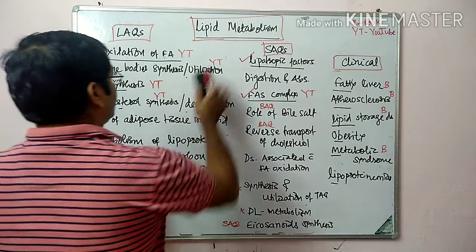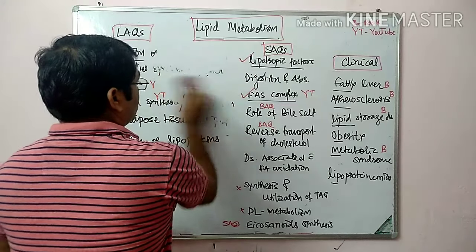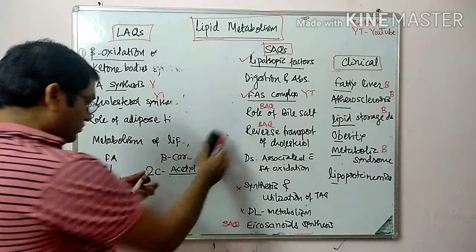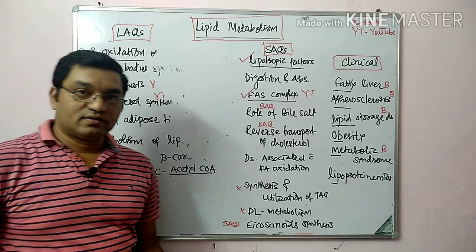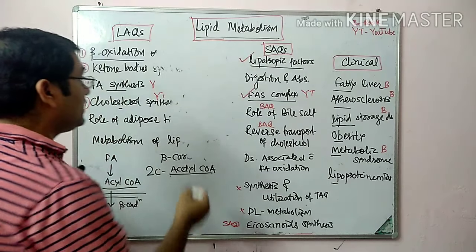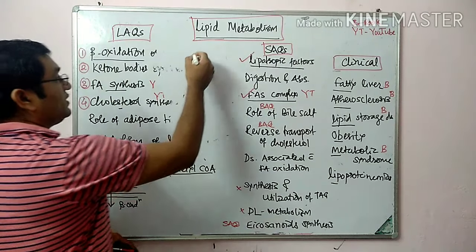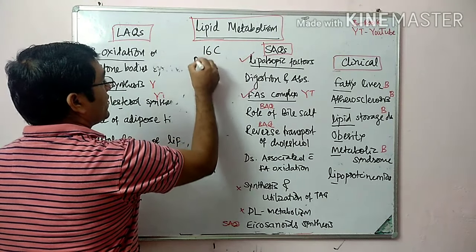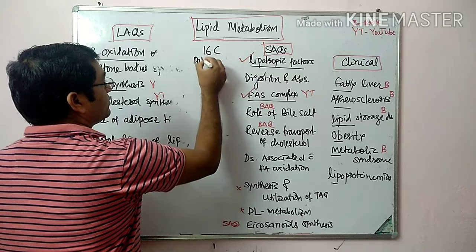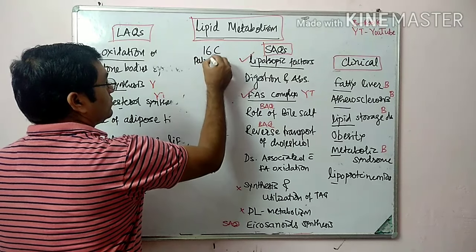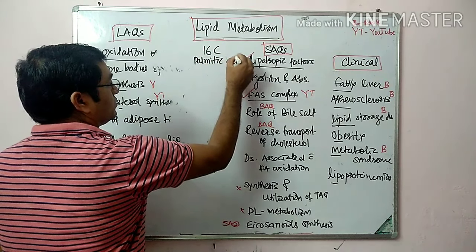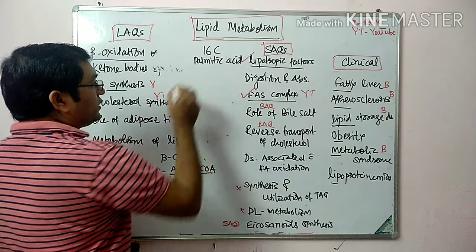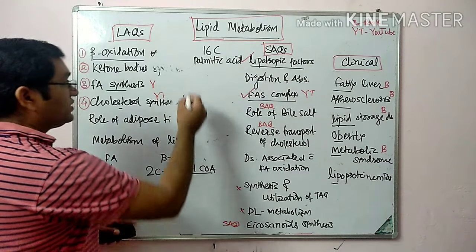For example, if there is palmitic acid, which has 16 carbons, it undergoes beta oxidation.